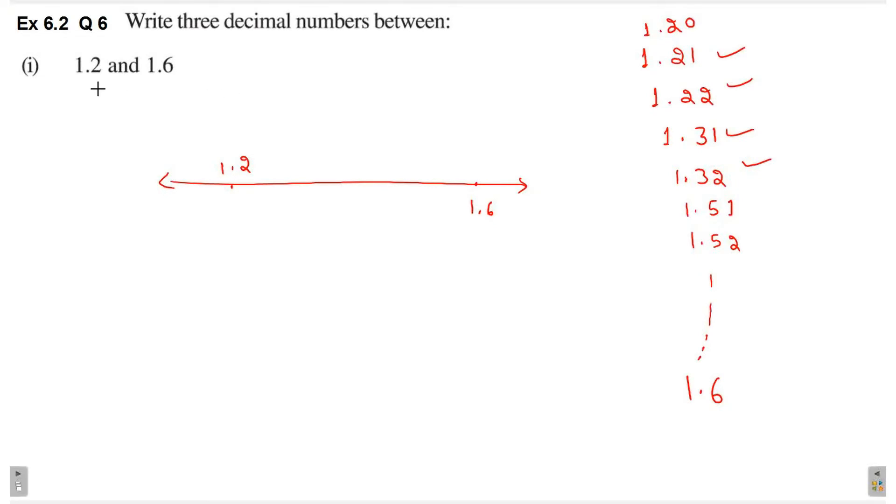So what is the simplest number we can write? Between 1.2 and 1.6, we can write 1.3, 1.4 and 1.5.